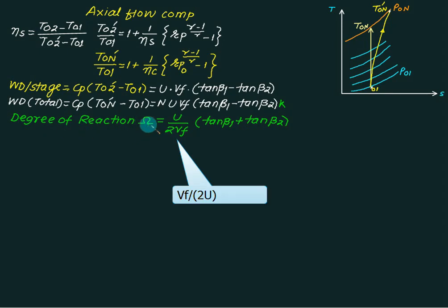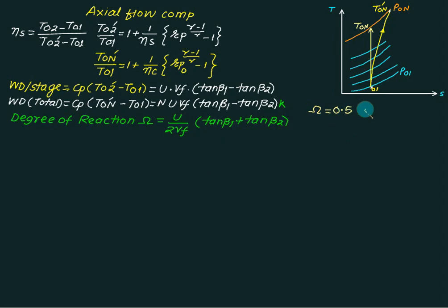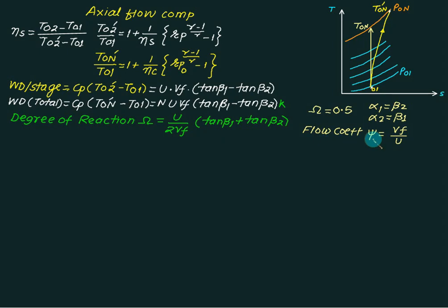The degree of reaction is represented by the symbol Ω and is given by U divided by (2 × Vm) multiplied by (tan β1 plus tan β2). In the special case where the degree of reaction is 0.5, α1 equals β2 and α2 equals β1. The flow coefficient ψ is the ratio of flow velocity to blade velocity.